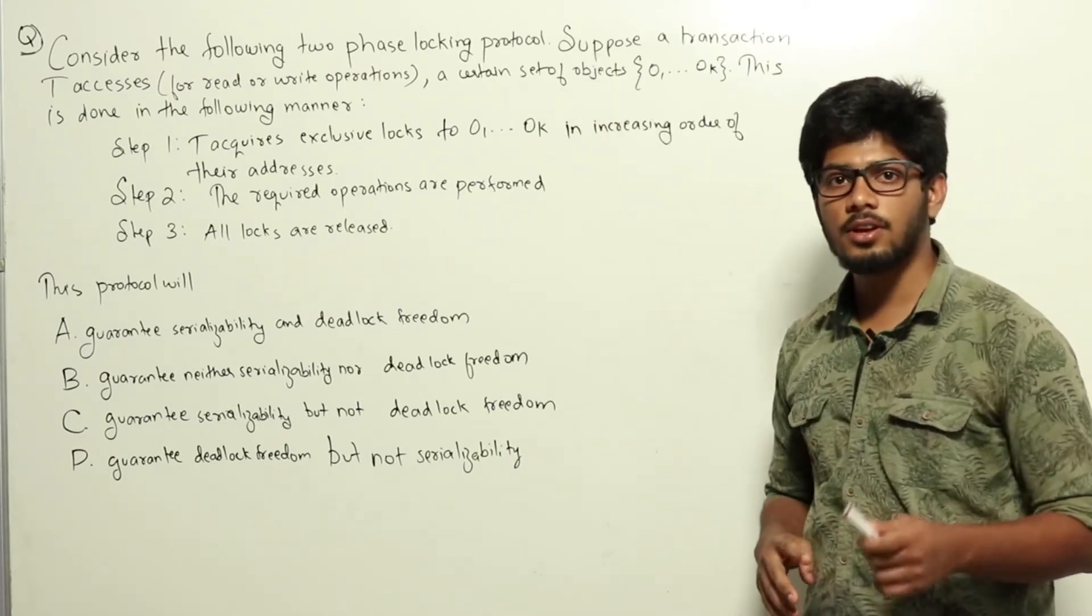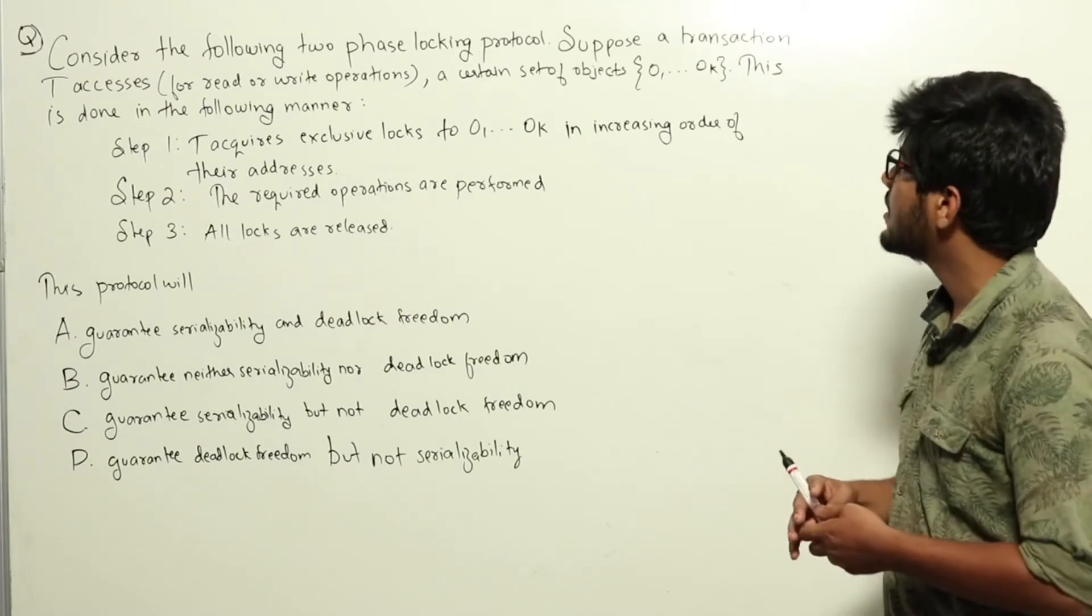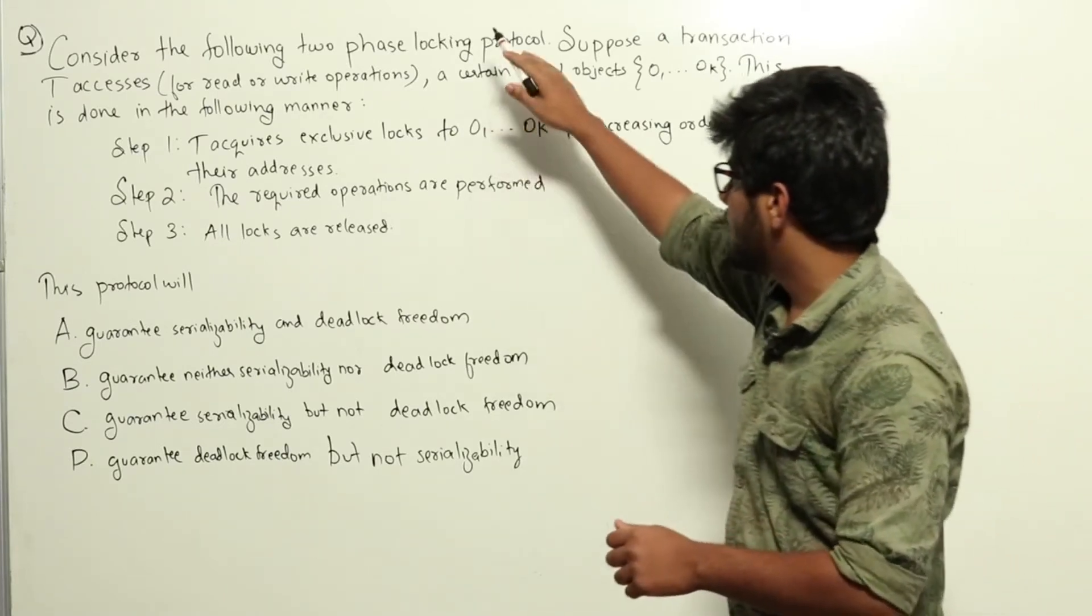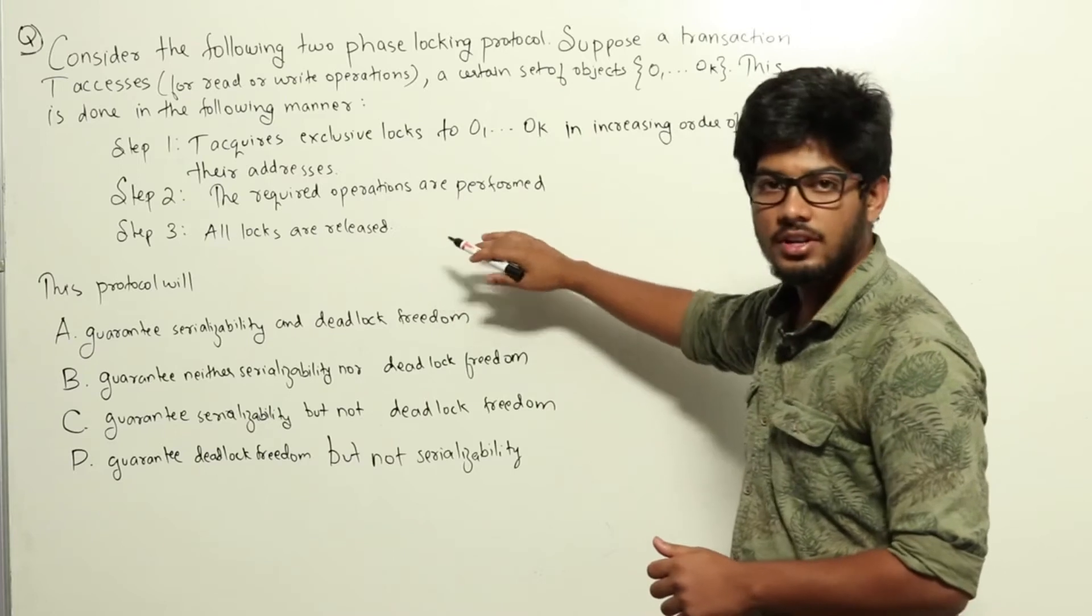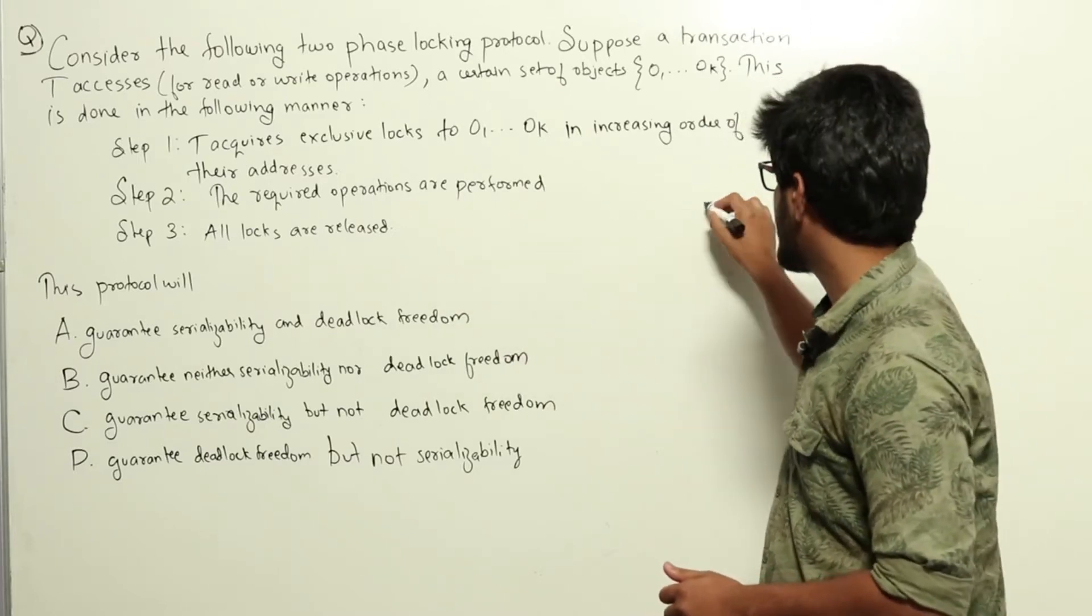Conservative two-phase locking protocol is conflict serializable, which means that this locking protocol is serializable. That is correct. Serializability is guaranteed.